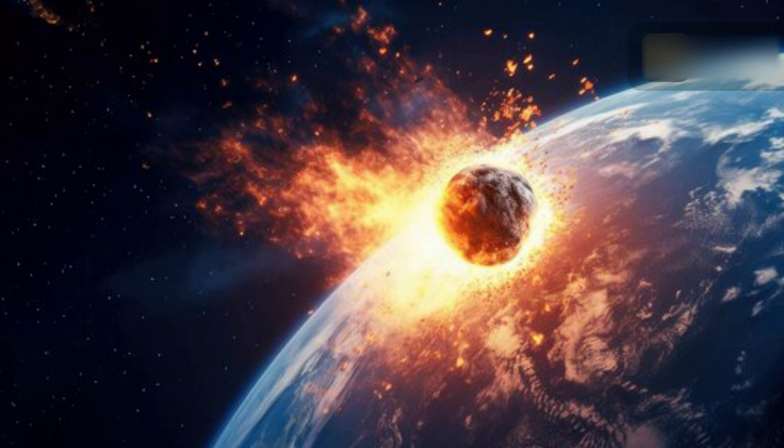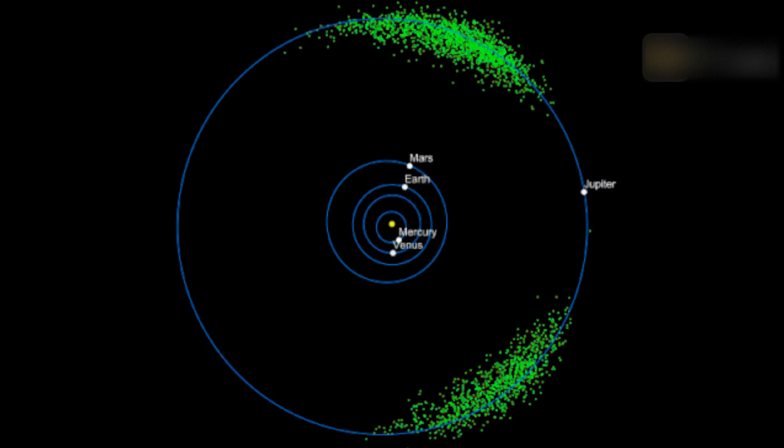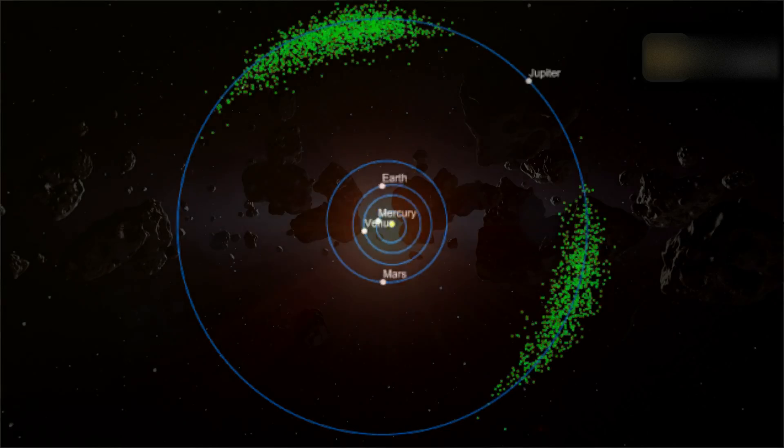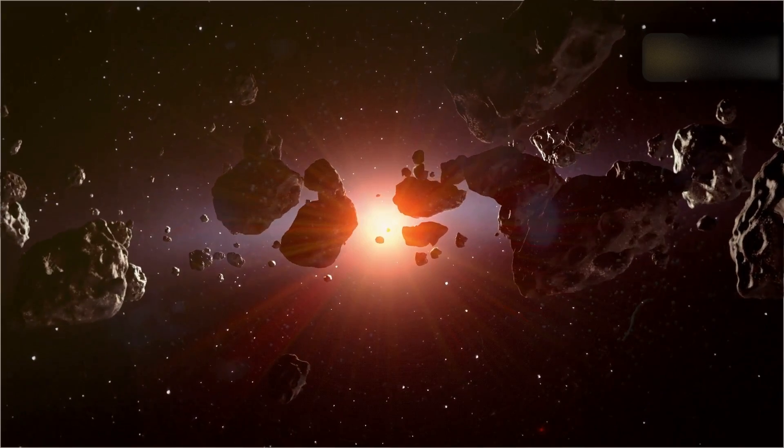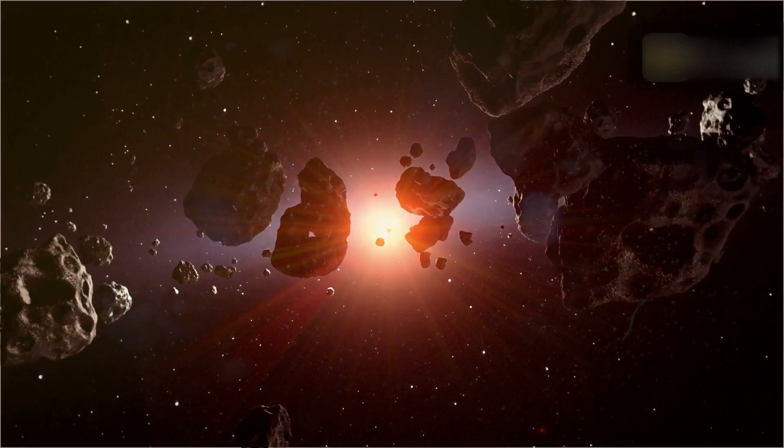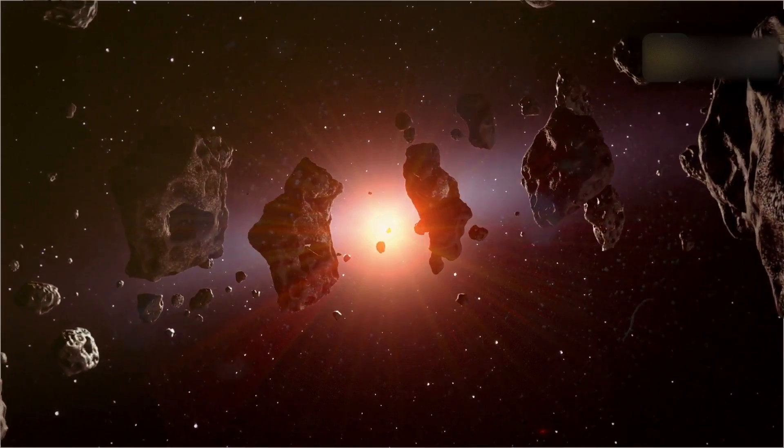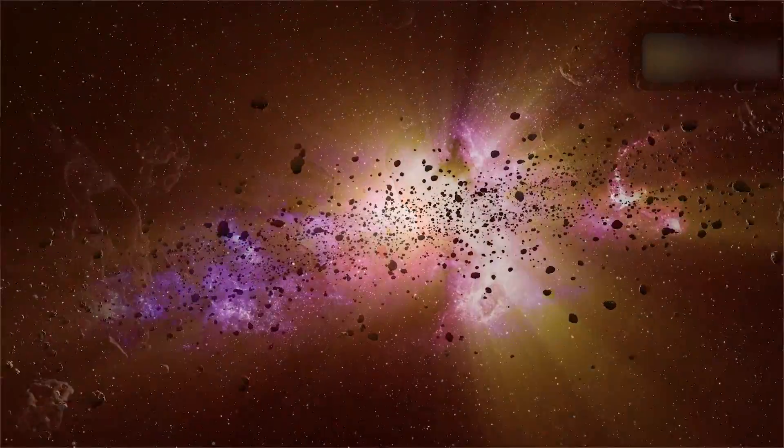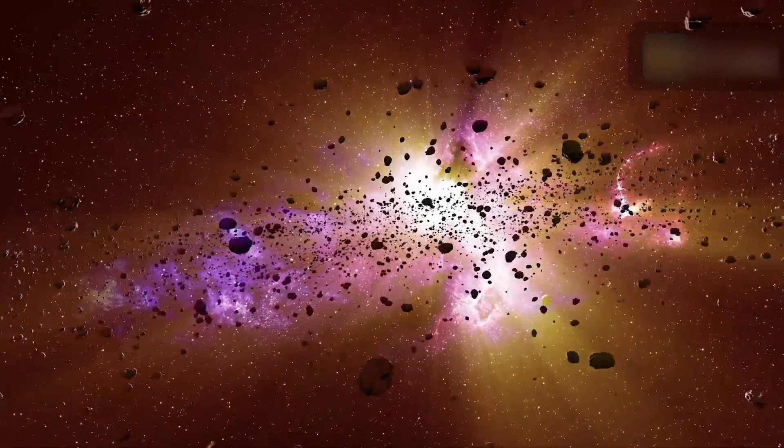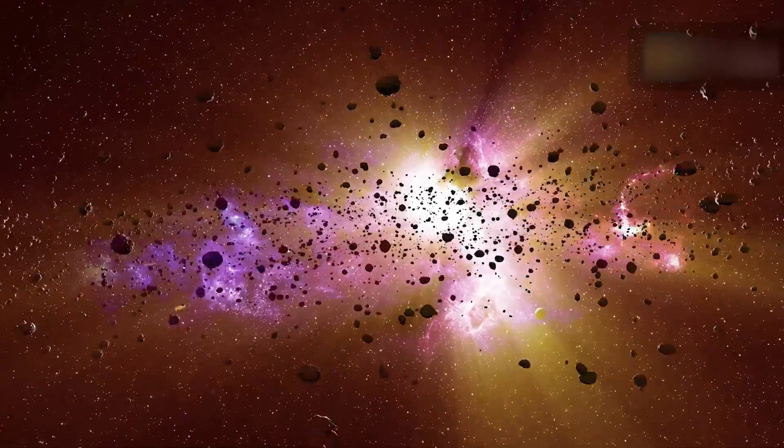Will this asteroid strike Earth this year? CNEOS continuously monitors all known near-Earth objects and assesses the impact risk they pose. The Center for Near-Earth Object Studies, managed for NASA at the Jet Propulsion Laboratory, precisely characterizes the orbits of all known near-Earth objects. It assists the Planetary Defense Coordination Office at NASA Headquarters in Washington in predicting their approach to Earth and developing comprehensive impact risk assessments.